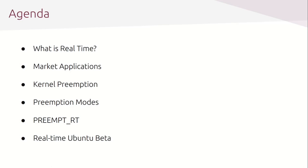The second part of this presentation will be a bit more technical, as we will go through the details of preemption. The beginning will be more introductory around the concept of real-time — what real-time is not and its applications. We will conclude with the announcement of a beta version of real-time Ubuntu, how to enable the kernel, how to file bugs, the current status, and try to clarify all your questions. Then we will have a Q&A, so feel free to drop any question in the chat.